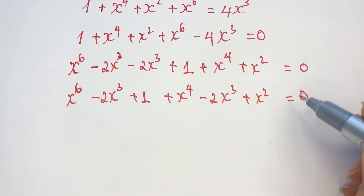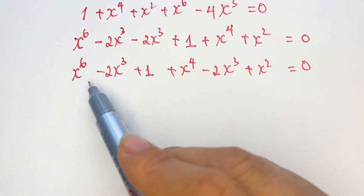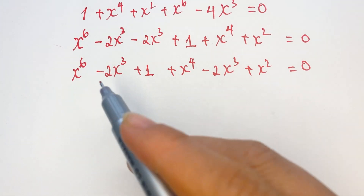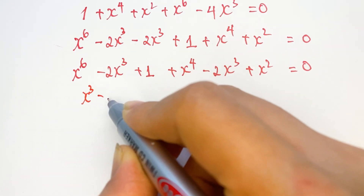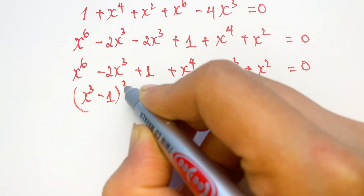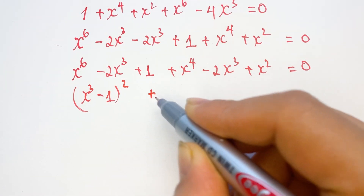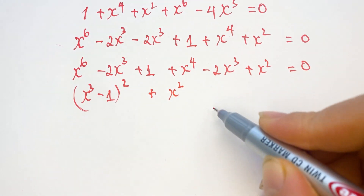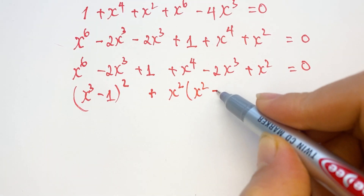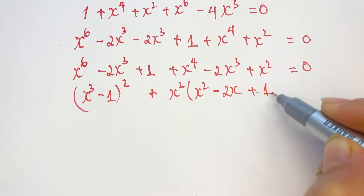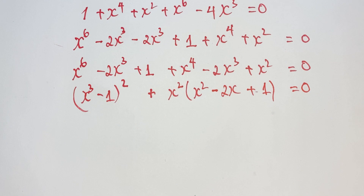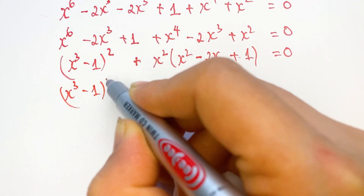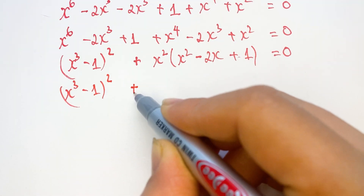Everyone look at that — x to the power 6, minus 2x cubed, plus 1 — it's an identity, the squared binomial. So you can write it as (x cubed minus 1) whole squared. Plus, you see, x squared is a common factor, so we have x squared times (x cubed minus 2x cubed plus 1) equals 0.